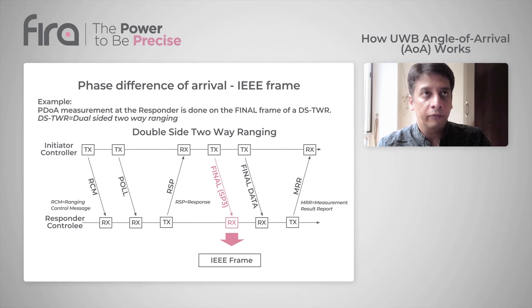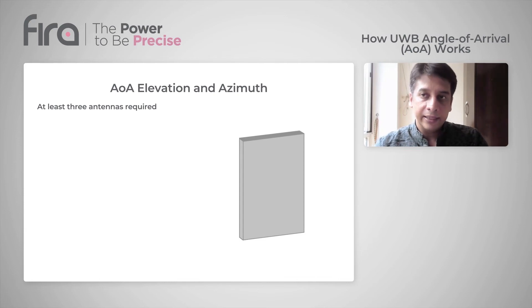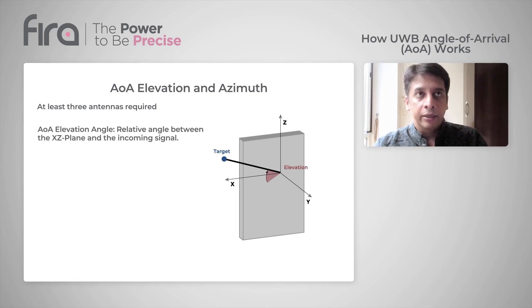When we talk about angle of arrival in a 3D space, it involves both elevation and azimuth. Here, on a phone held in portrait mode facing you, the x-axis is the horizontal display axis of the phone, the y-axis is the vertical display axis of the phone, and the z-axis is orthogonal to the phone's display.